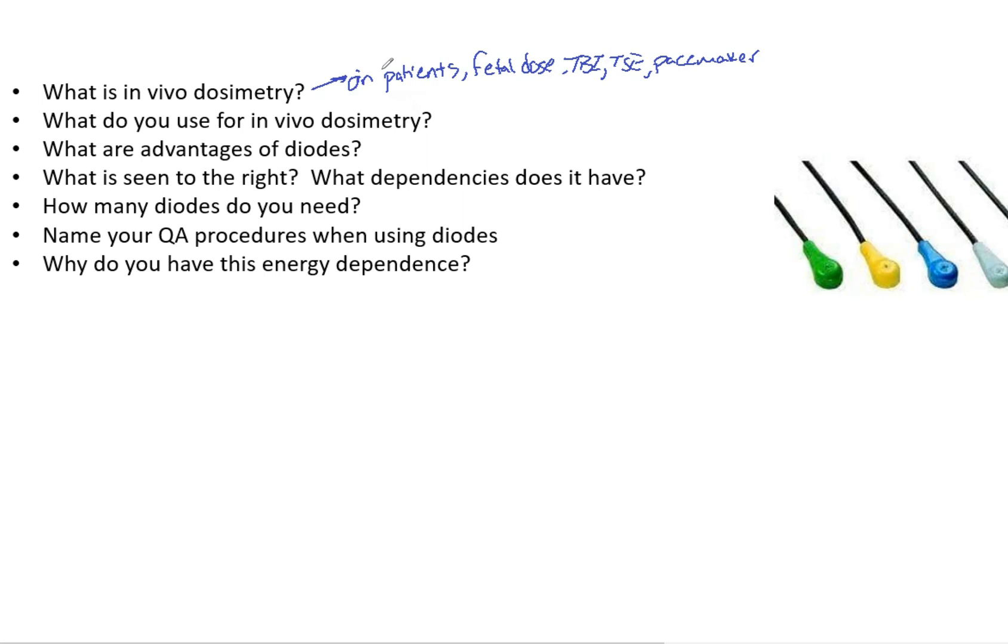So what you use for in vivo dosimetry, that's why we use them. And so you can use a lot of things. You can use TLDs, you can use diodes, you can use OSLDs, you can use nano dots, there are a lot of options for in vivo dosimetry. TLDs and diodes are the most common. MOSFETs are also somewhat common. Just know when you use them and which ones they are.